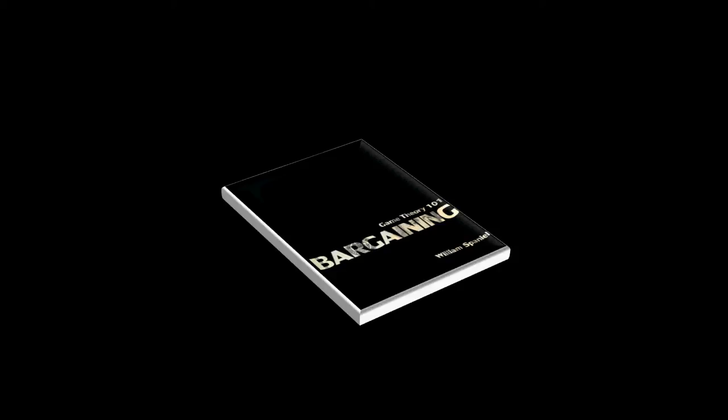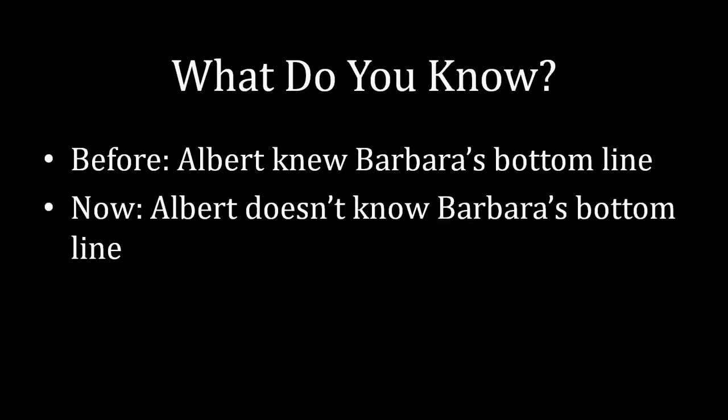To situate where we are with this lecture and the upcoming lectures as opposed to what we have done in the past: before, Albert knew what Barbara's bottom line was — or at least he knew Barbara's expectations about her prospects elsewhere, what her outside option was. The information Albert knew was identical to the information Barbara knew. What we're venturing into now is a situation where one party knows something the other doesn't. Specifically, we're focusing on a situation where Albert doesn't know Barbara's bottom line.